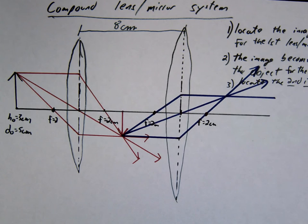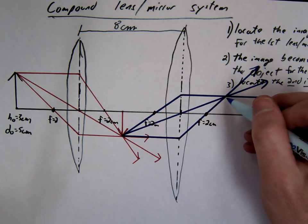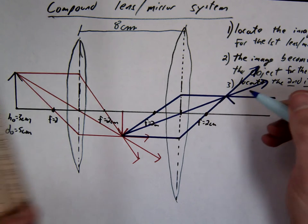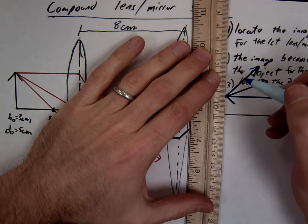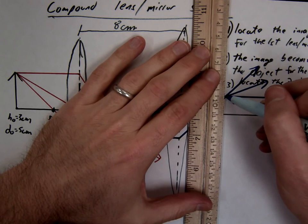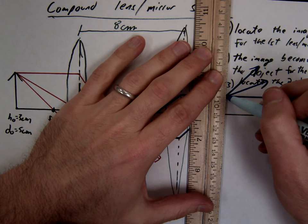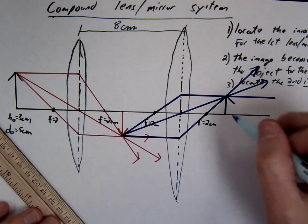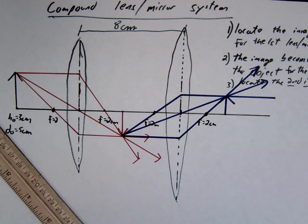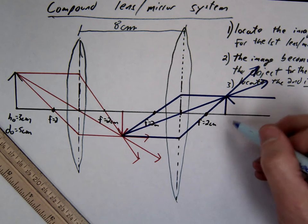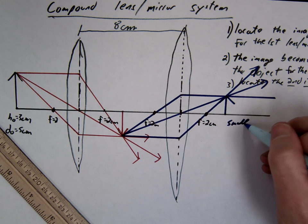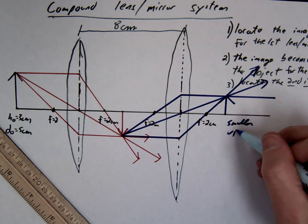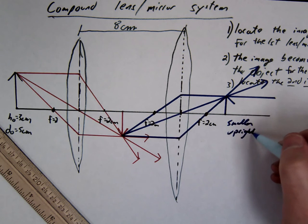Alright, there's our image. Make sure you draw in the actual image. And there we go. What are some things you notice about this image? Smaller. Upright.